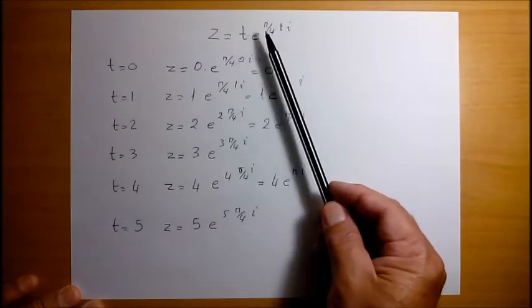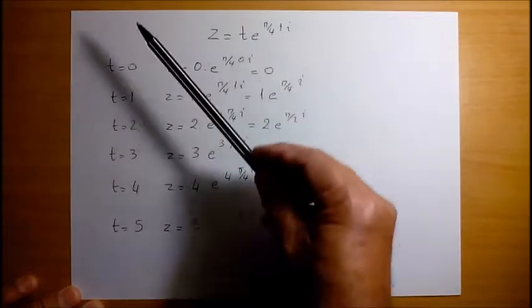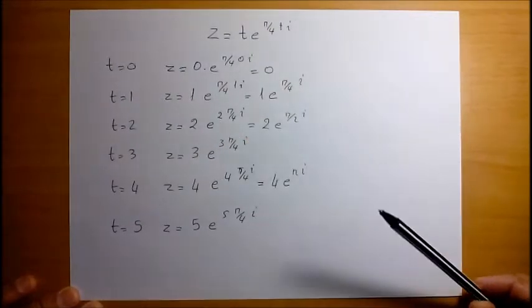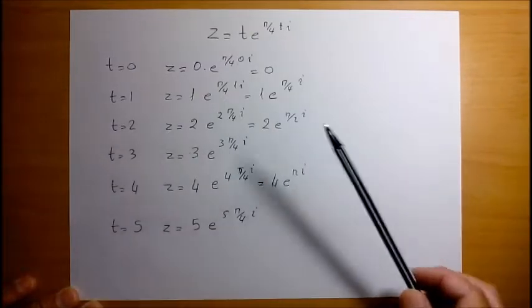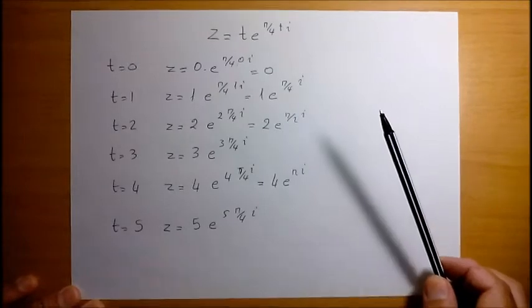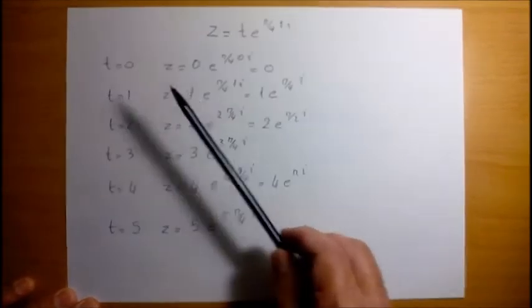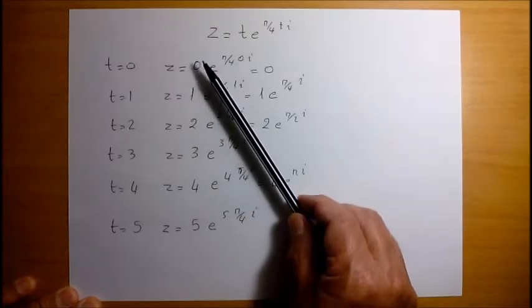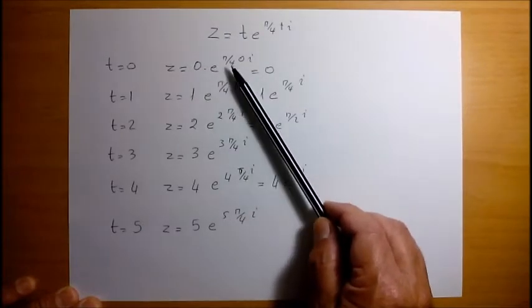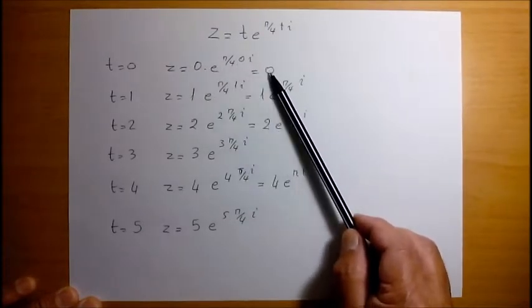The parameter t will take different values from 0 to whatever number you like, so let's calculate these various complex numbers. For t equals 0, z equals 0 times e to the pi by 4 times 0 i, which is 0.